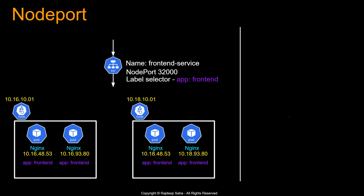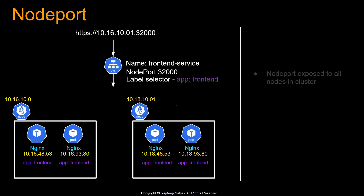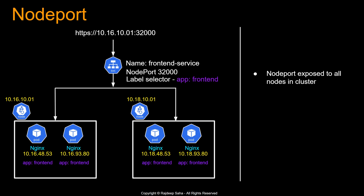Interesting question: let's say you have the same pods running in two different nodes — Node 1 at 10.16.10.1 and Node 2 at 10.18.10.1. All four pods have the label 'app: frontend', and the label selector for the Node Port service is also 'app: frontend'. If you type 10.16.10.1:32000, where does the traffic go? Will it go only to the node matching the IP, or to the other node too? Actually, the traffic will get distributed across both nodes, because this node port is exposed to all nodes in the cluster. Even though you just type in one node IP, it's going to send traffic to 10.18.10.01 as well.